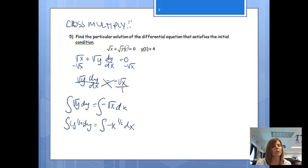And now from here, we can actually use our power rule, apply our power rule to get at this. So we'll add one. So we'll get 2 thirds y to the 3 halves is equal to negative 2 thirds x to the 3 halves. And then don't forget, we can't find c if we don't ever put plus c in the problem.